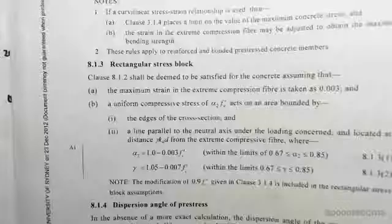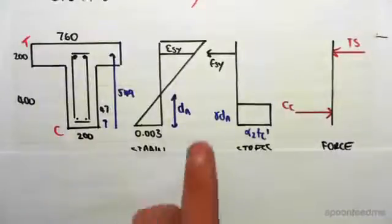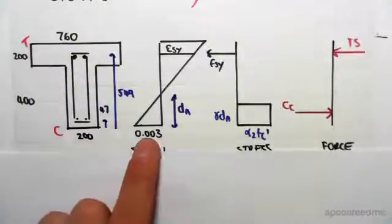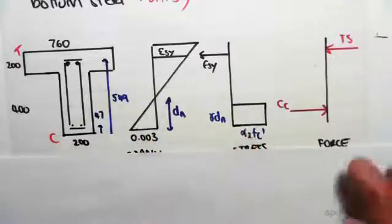So we're going to be seeing that now. Once again, from the code we extract the maximum strain in the compressor fiber as well as the rectangular stress block.